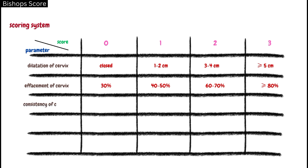For consistency of the cervix: a firm cervix is given a score of 0; a medium consistency cervix is given a score of 1; and a soft cervix is given a score of 2. For position of the cervix: a posterior cervix is given a score of 0; a mid cervix is given a score of 1; and an anterior cervix is given a score of 2.